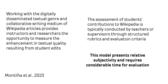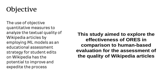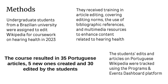However, this evaluation can be time-consuming due to its subjective nature. Regarding this context, this study investigates the potential of using machine learning models such as ORES to objectively analyze the quality of Wikipedia articles edited by students. The aim is to compare its effectiveness with traditional human-based evaluation methods. Students engaged in a coursework on hearing health were tasked with editing Wikipedia articles, and the initiative included training sessions covering article editing, references, and the integration of Wikipedia resources.